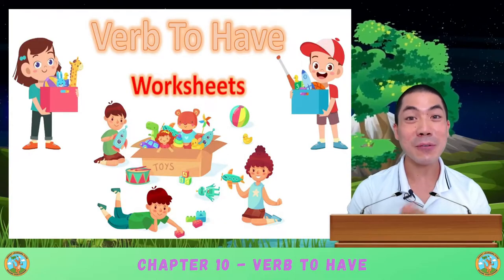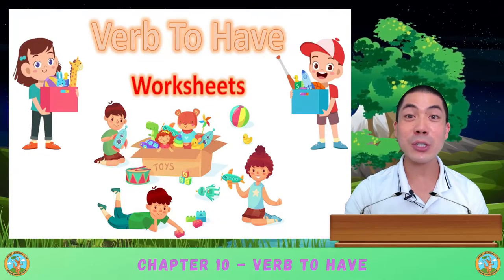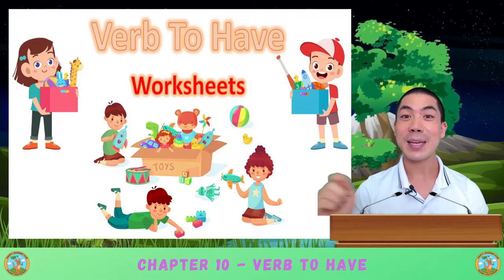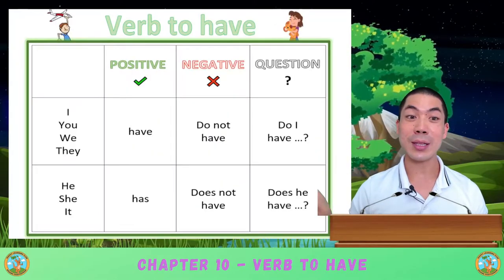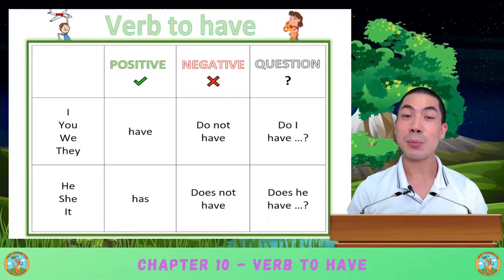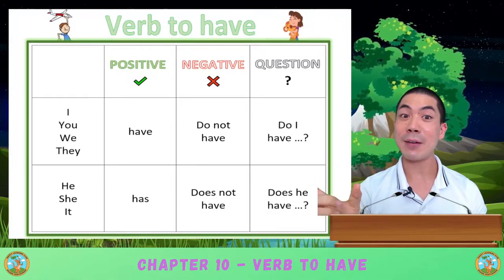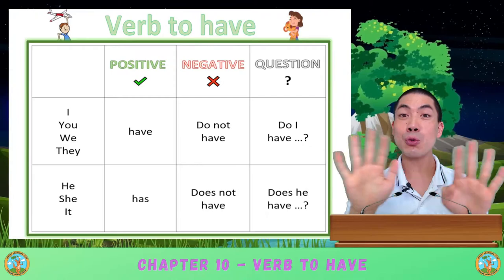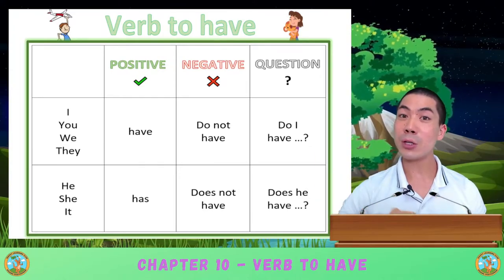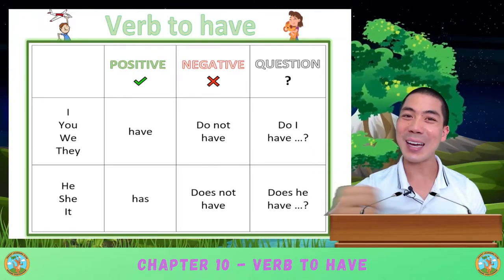Before we get to the worksheets practice, let's have a quick revision of what we've learnt so far. In the previous class, we learnt this table. With I, you, we, they, the positive verb to have is 'have'. The negative is 'do not have'. The question form is 'Do I have? Do you have?'